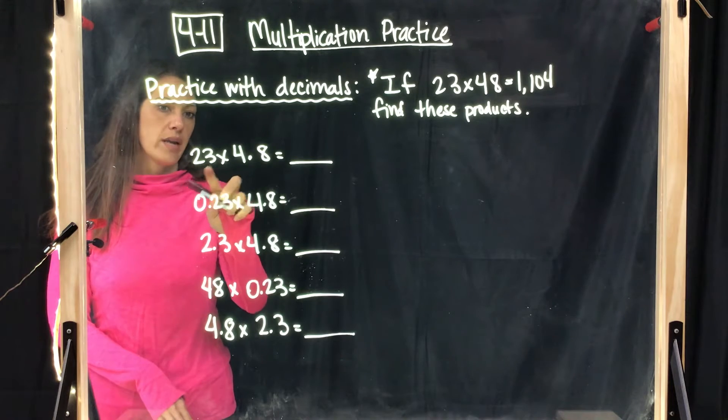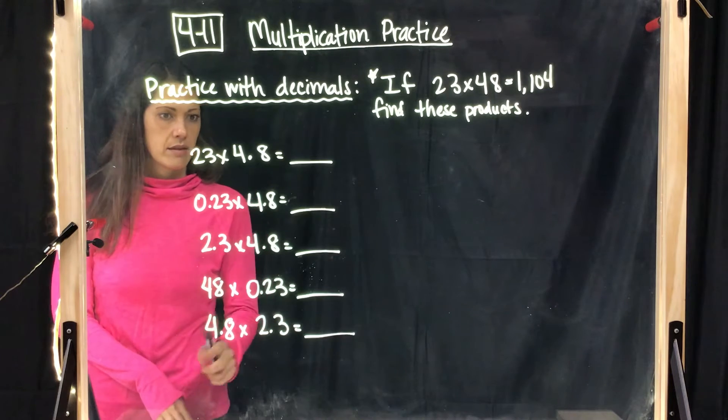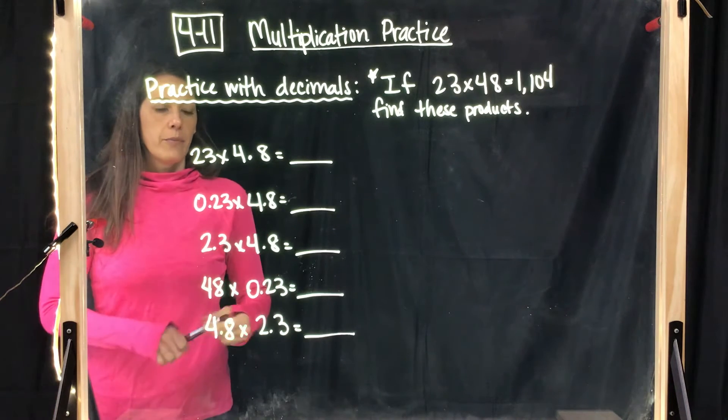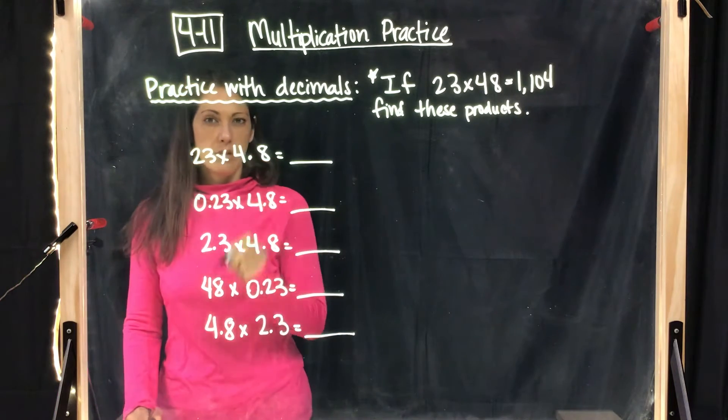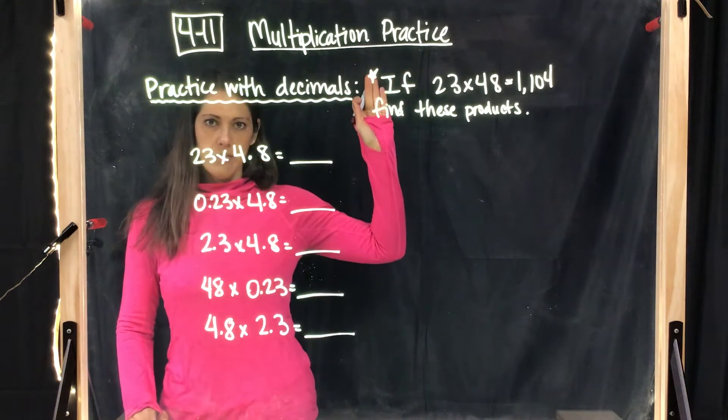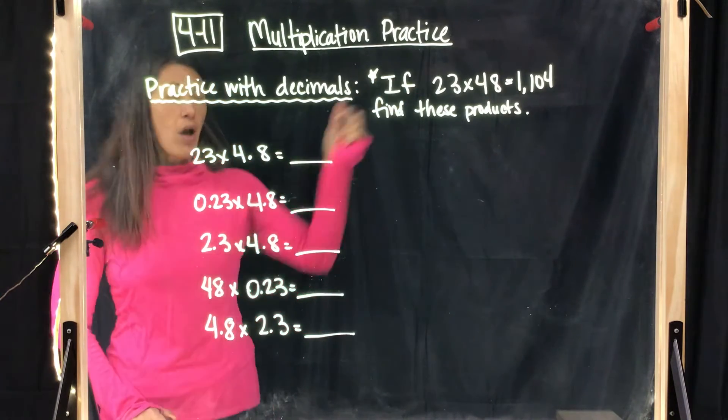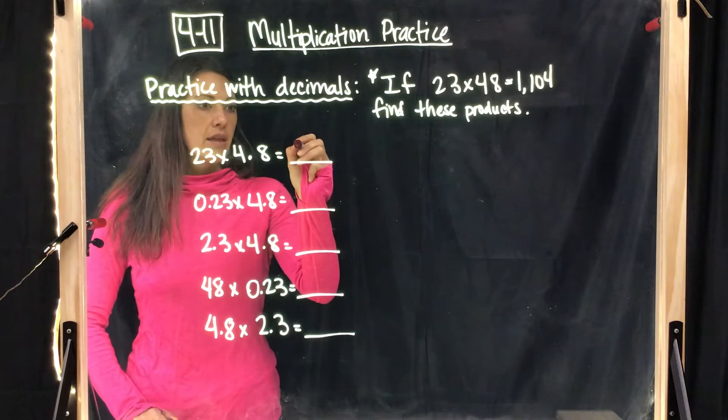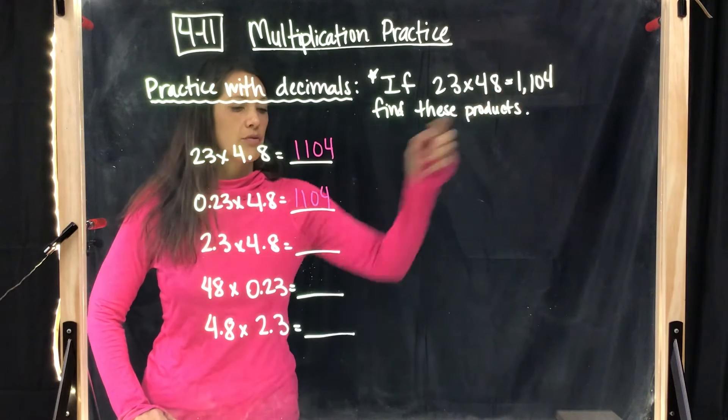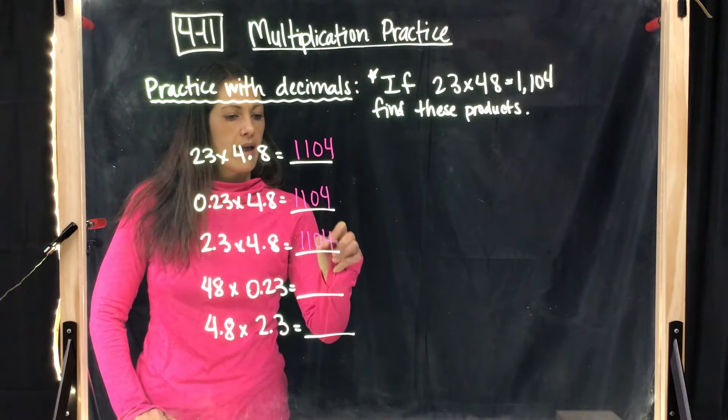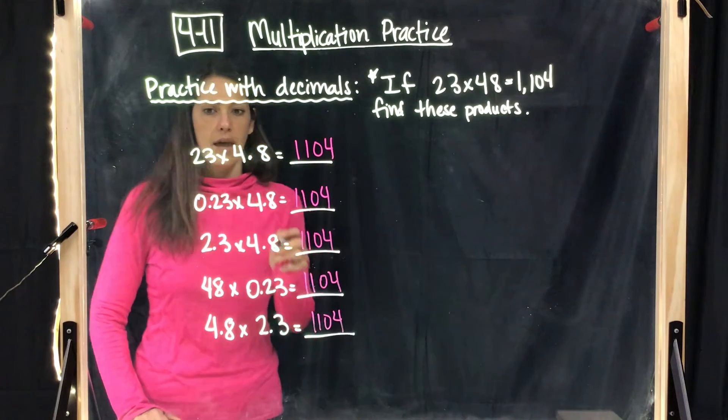If you notice, it's 23 and 48, but I have decimals in the numbers. So what you would do in this situation is, remember, when we multiply with decimals, they go away to decimal island, and we don't even multiply with them. Then they come back in when we're done multiplying. So if we already have the answer, then we can put those numbers here, 1104, and come in and put the decimals in after.